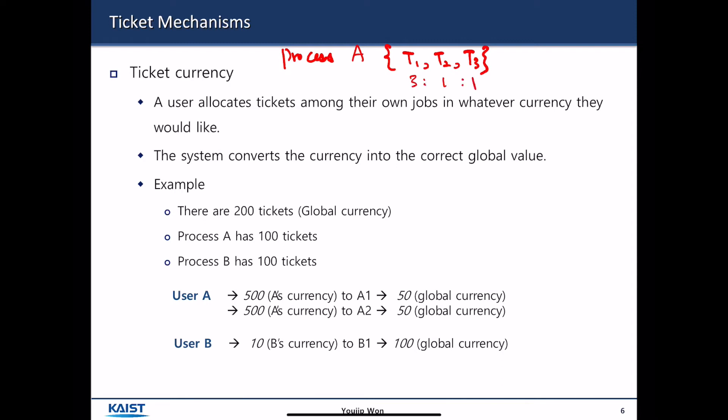In that case, process A has to reallocate the CPU cycle that has been allocated to itself to its child threads based upon some different unit currency. So, the ticket currency: a user allocates tickets among their own jobs in whatever currency they would like. And then a system converts the currency into the correct global value.